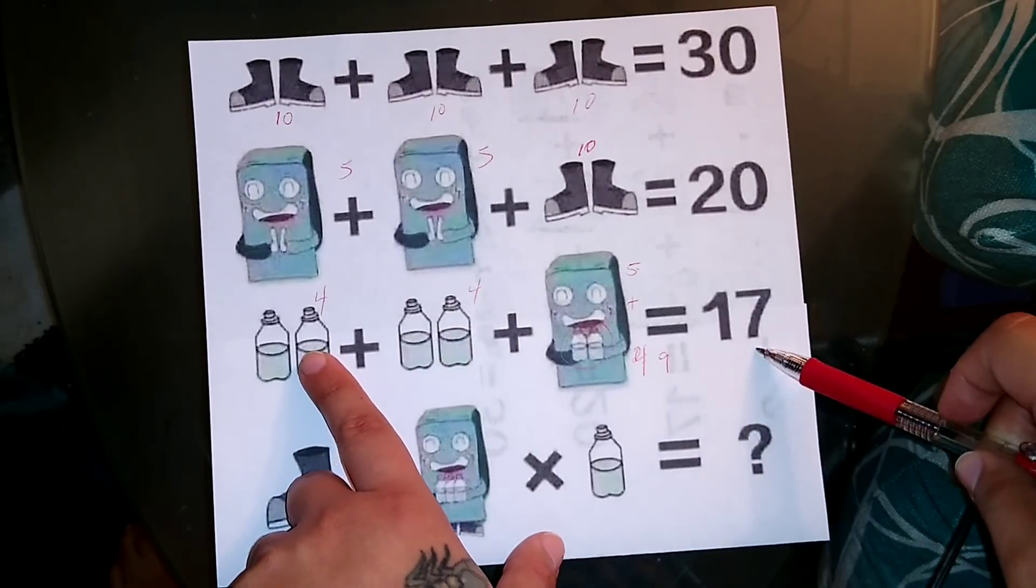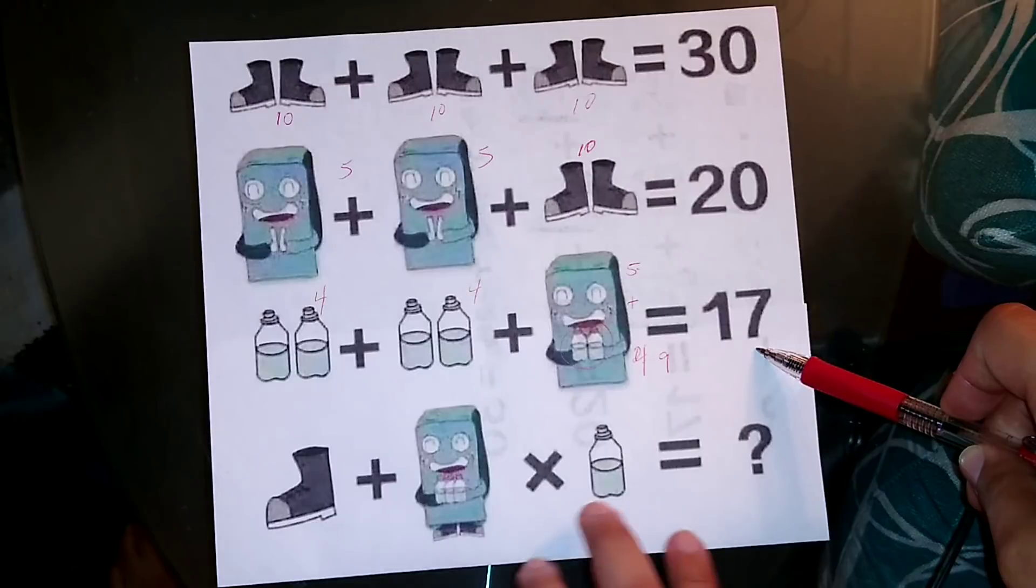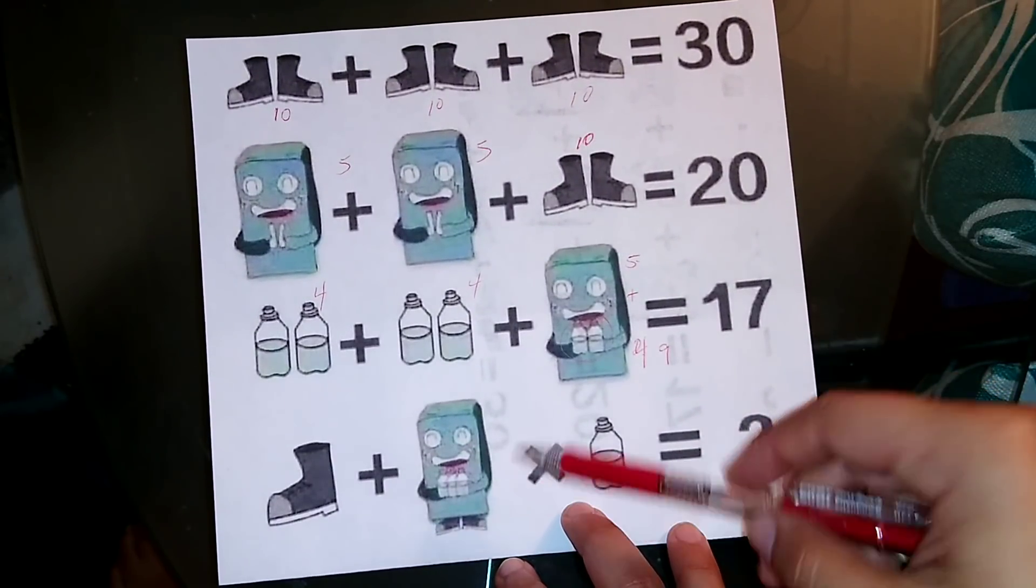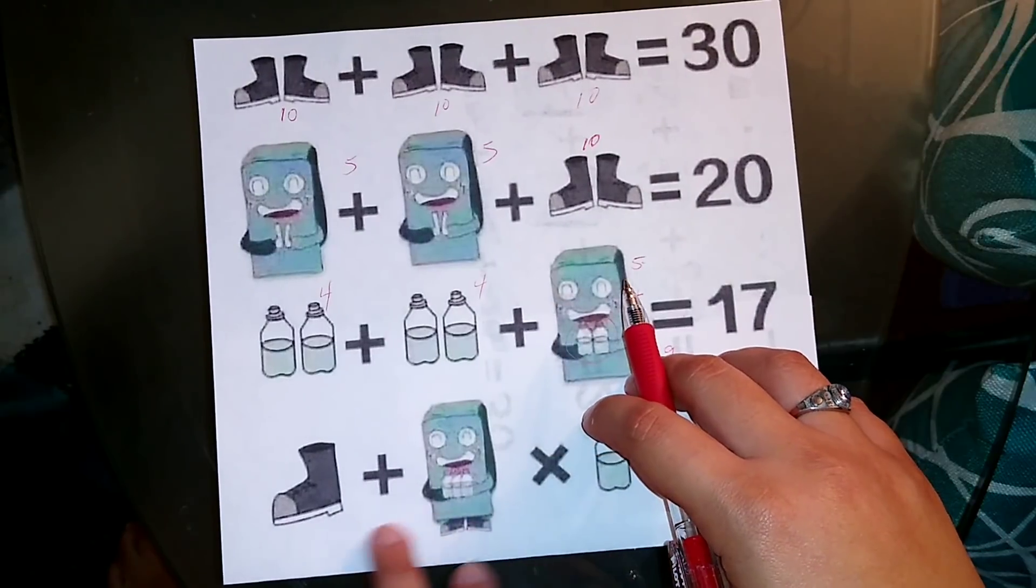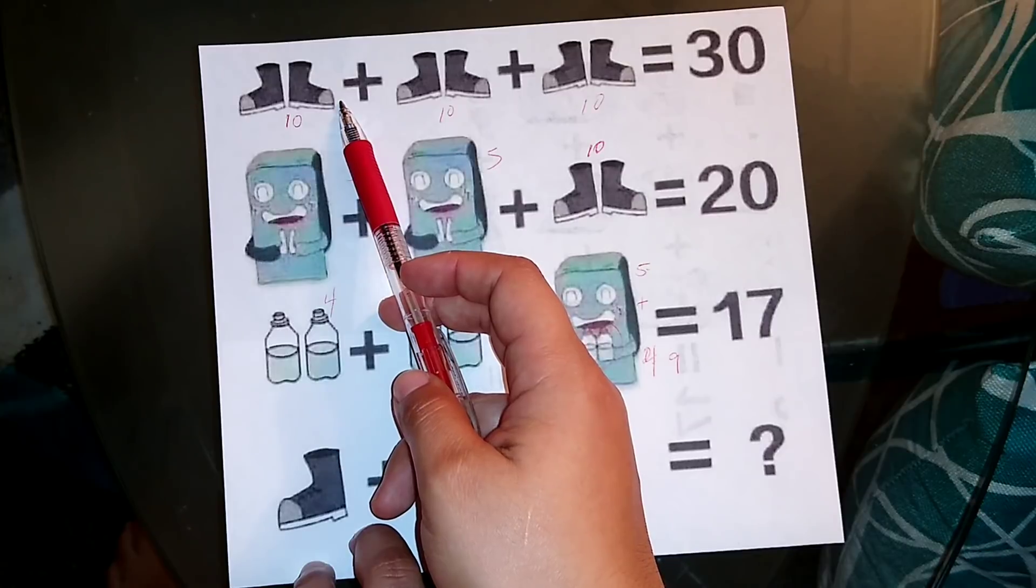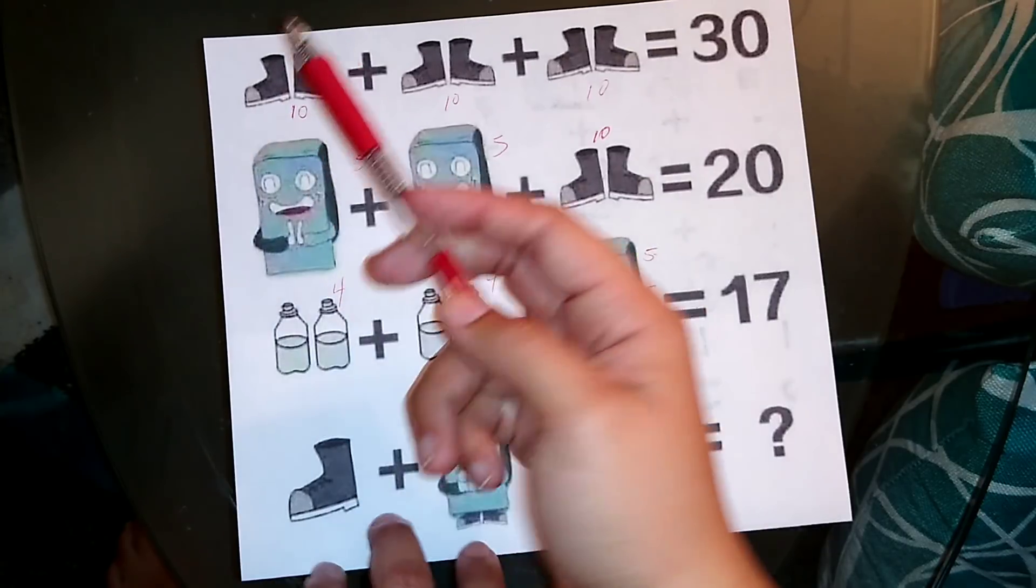Now the next line is where a lot of people get stuck, but let's pay attention here. Remember what I said up here: both pairs of shoes is 10, but one pair of shoes is 5.